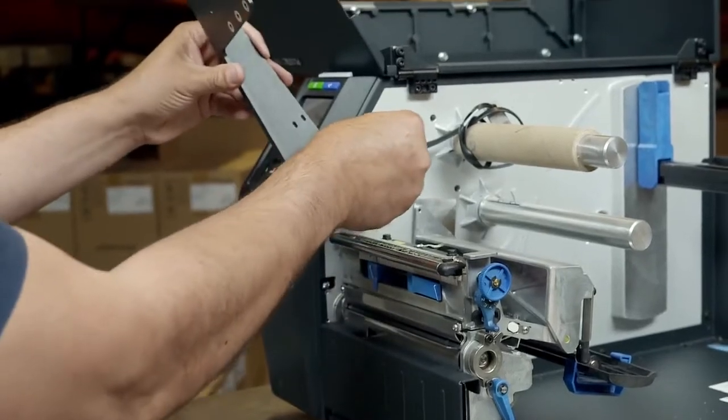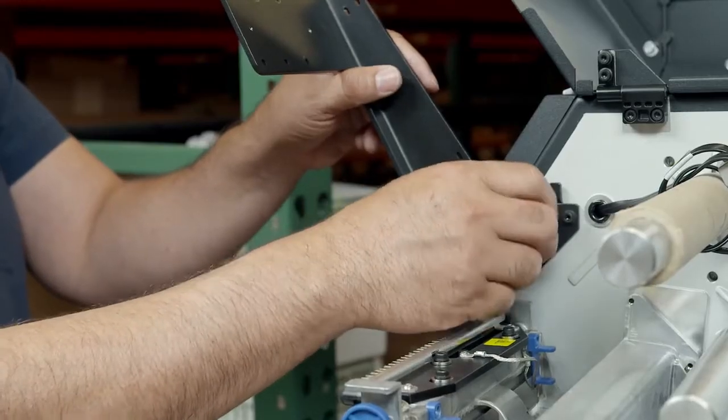Attach the ODV bracket to the printer using the four hex screws. Insert and hand tighten the screws.